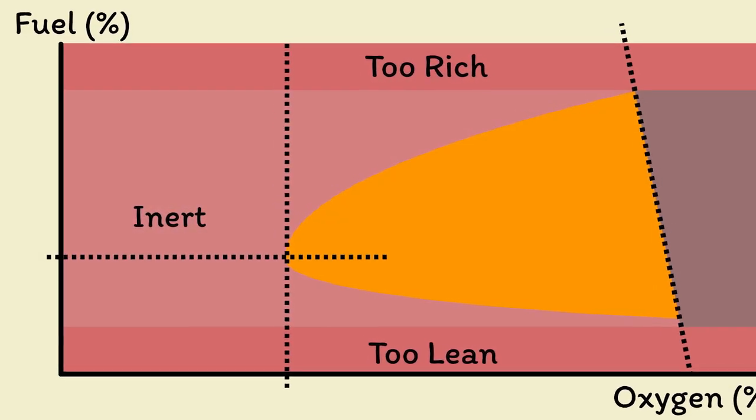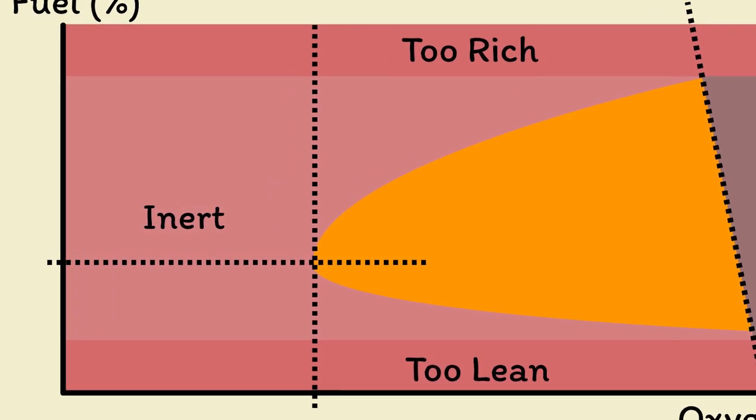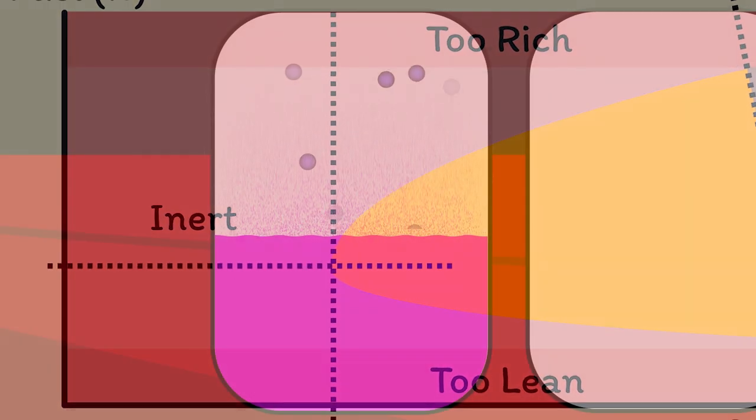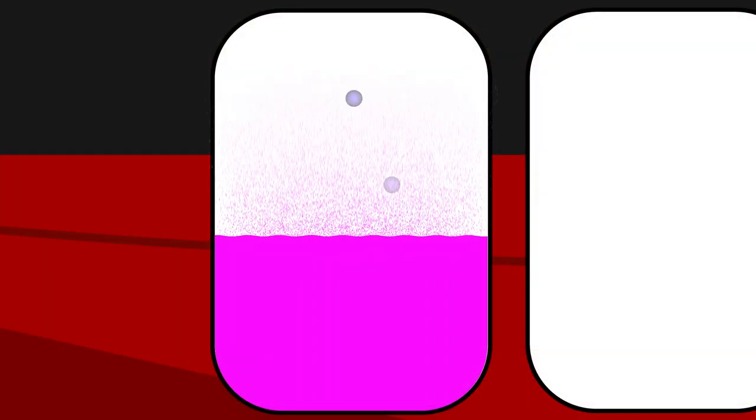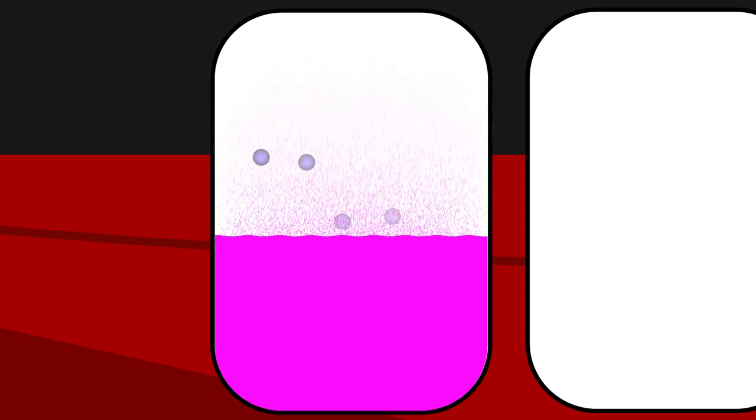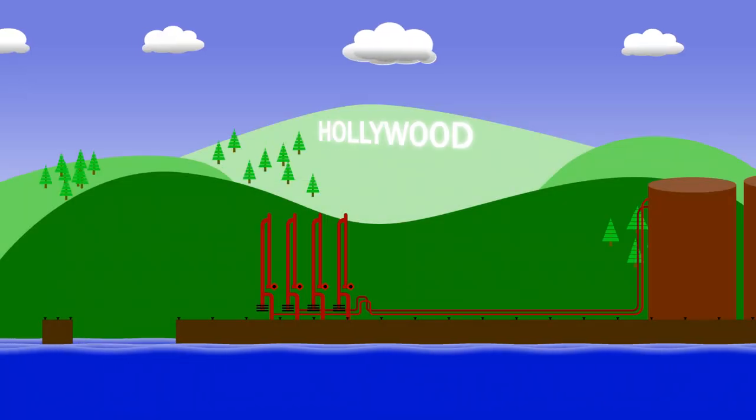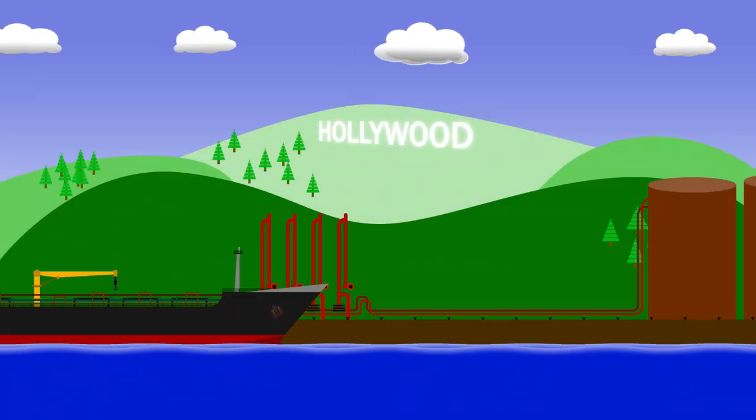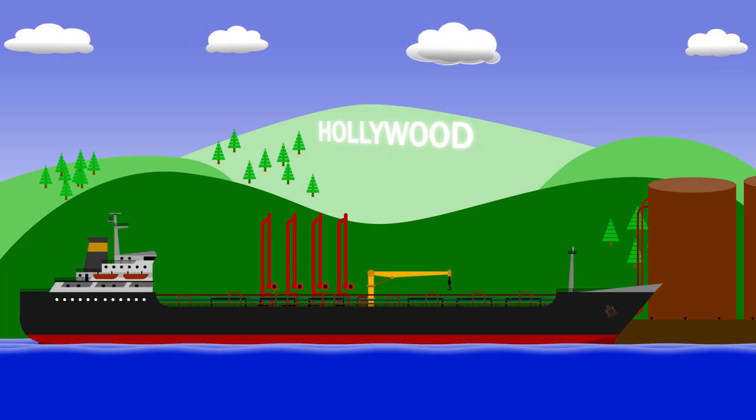This plays back into that flammability diagram, bringing the tank atmosphere safely down into the inert area. It's no longer possible for the flammable cargo vapours to ignite. And this is why fires and explosions on modern tankers don't result in the same catastrophe that we witnessed in Los Angeles in the 1970s.